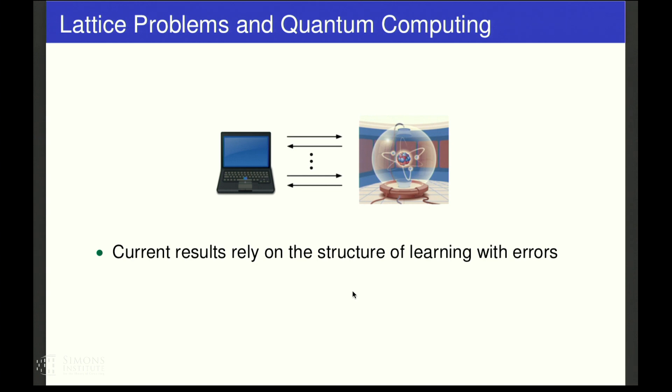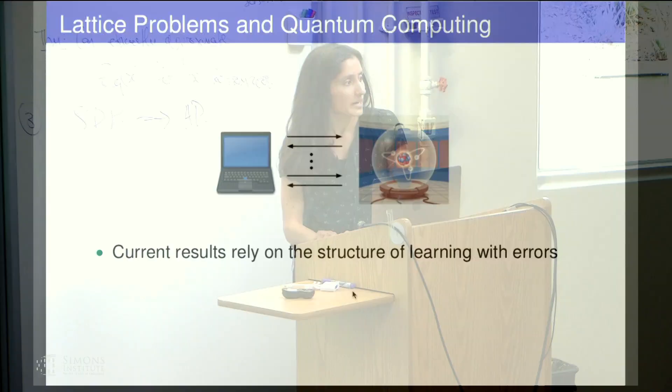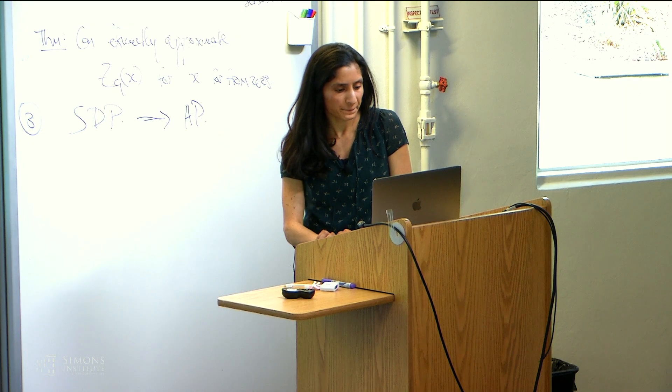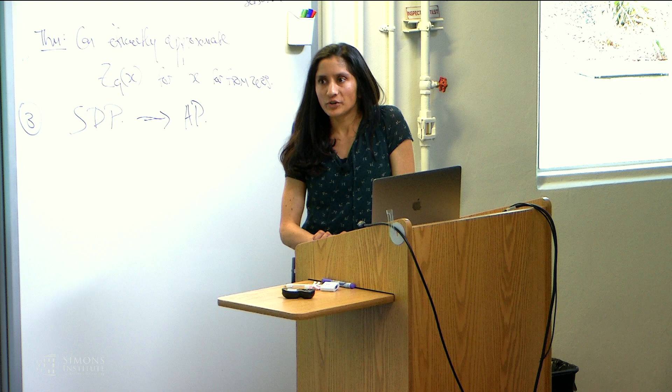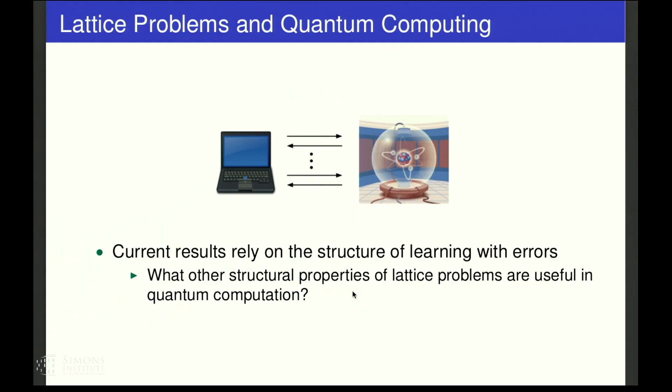Let me give you a few examples of the types of questions we can explore. In all of the current results, we heavily relied on the structure of learning with errors to build these protocols. It was quite surprising that learning with errors did have enough structure to allow that problem to be so useful with quantum computers. One question is whether there are other structural properties of lattice problems, which we haven't explored yet, which could be useful in other types of quantum cryptographic tasks.